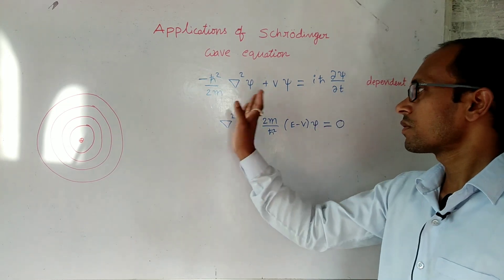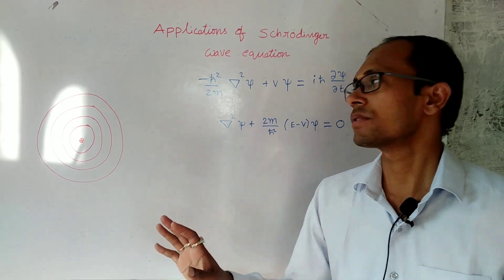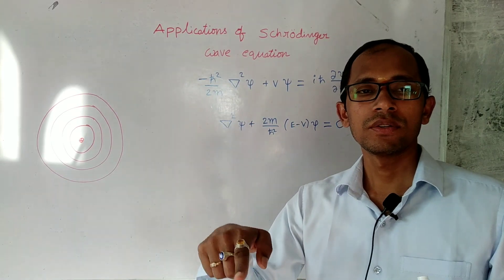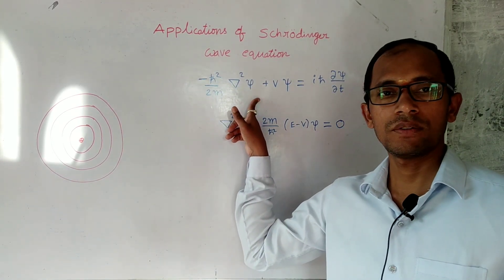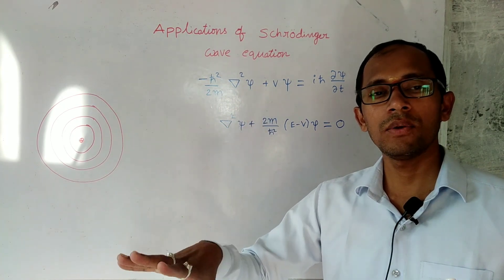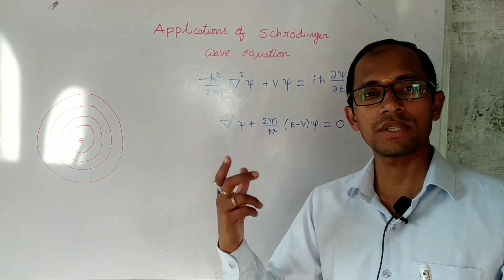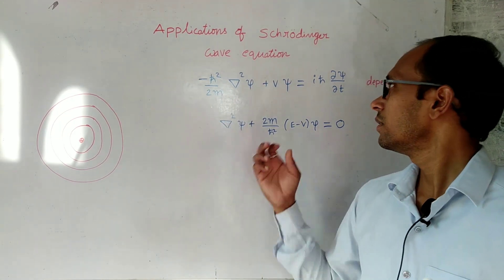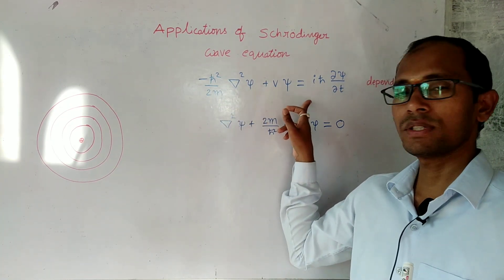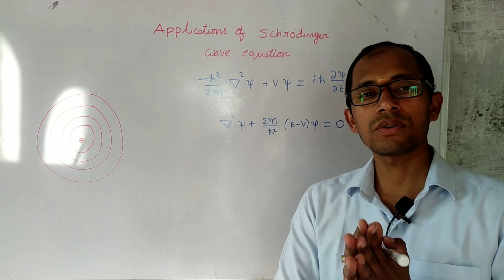What this equation gives, basically, is the energy values of that particular particle. So this equation, for a moving particle — which is a matter wave — gives the energy values of a particle of mass m moving with velocity v in a potential V, where V is the potential energy. So this equation basically gives the energy values of the particle.